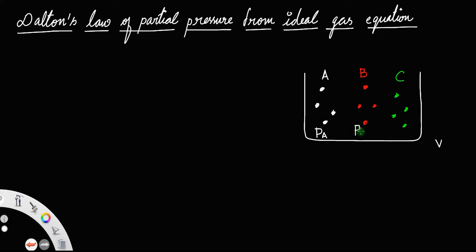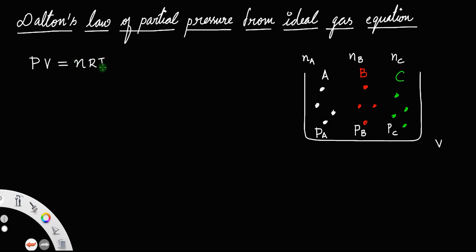Let PA be the partial pressure of gas A, PB the partial pressure of B, and PC the partial pressure of C. Let NA represent the number of moles of A, NB number of moles of B, and NC number of moles of C. From the ideal gas equation, we have PV = NRT, which is called the ideal gas equation or the perfect gas equation.